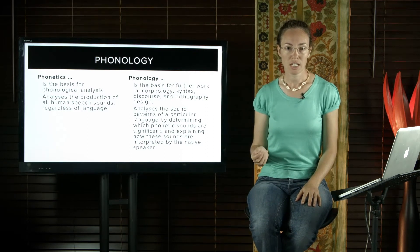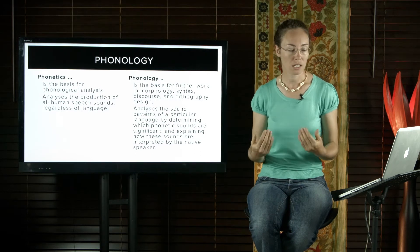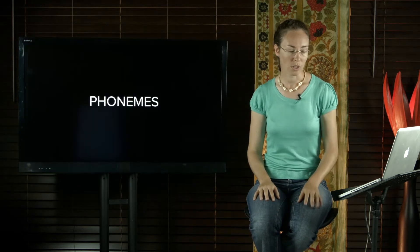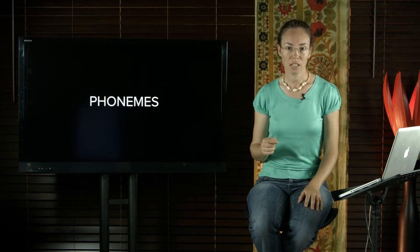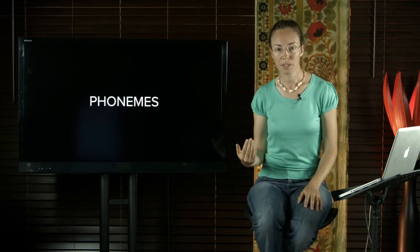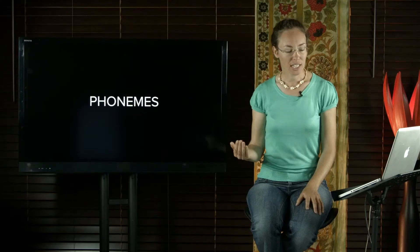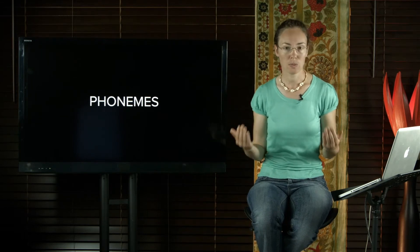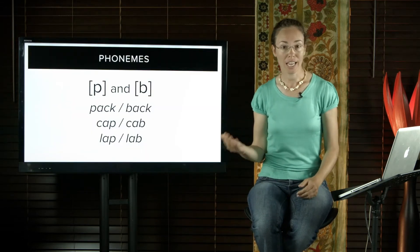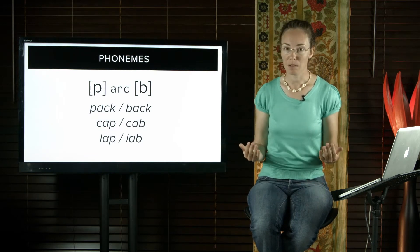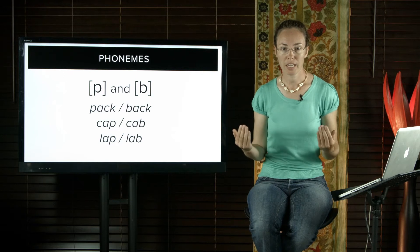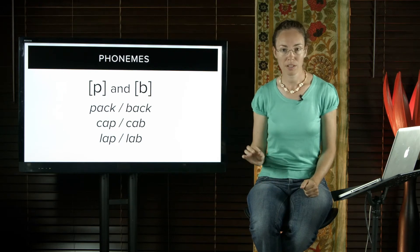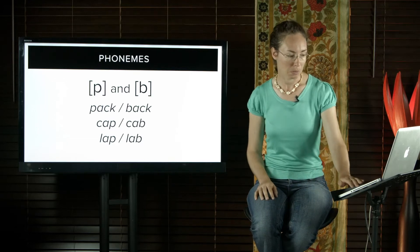Every language has a set of sounds that function as distinct sounds and can distinguish meaning. These are called phonemes. For example, in English, p and b are functionally separate — they are distinct sounds that can indicate a different meaning when either one is used. We can see they distinguish meaning because 'pack' and 'back' are two separate words with separate meanings. So are 'cap' and 'cab', or 'lap' and 'lab'. The only way we can tell these pairs apart is by the sounds p and b, so we call this a minimal pair.